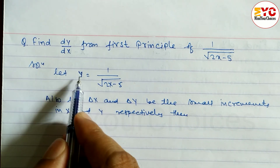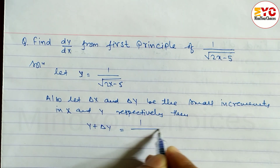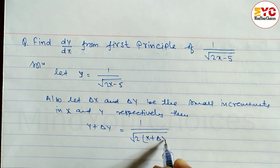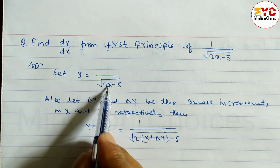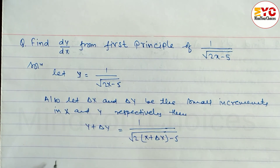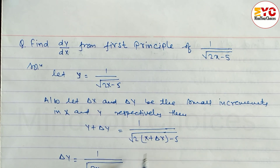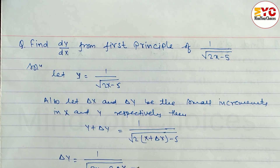Then we have to write y + del y equals 1 over root under (2(x + del x) - 5). Here the new x has del x added to it. So we can write del y is equal to 1 over root under (2x + 2 del x - 5).